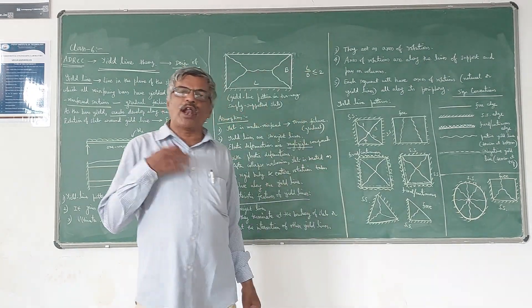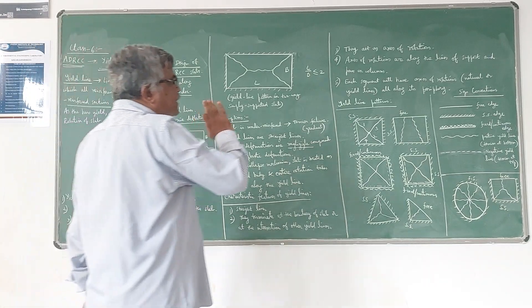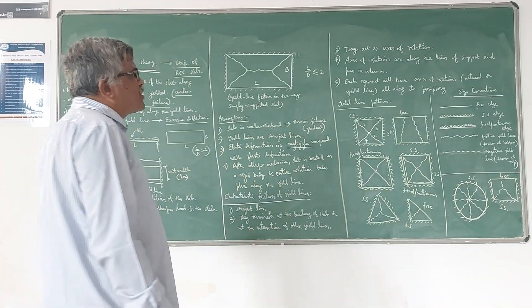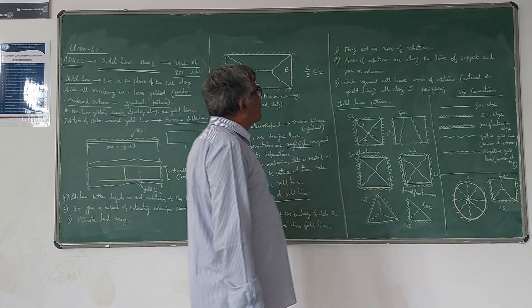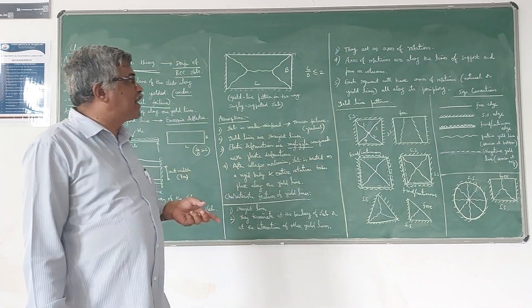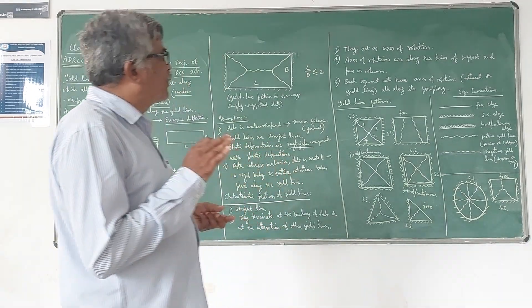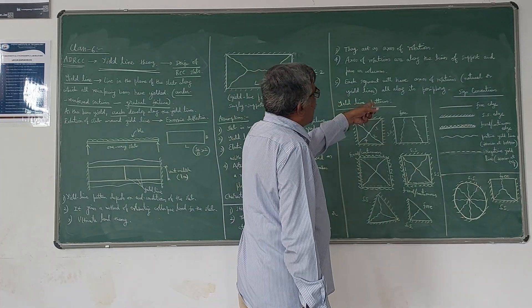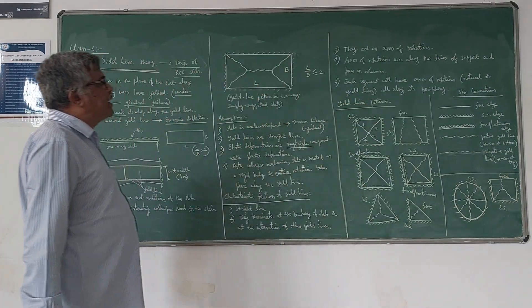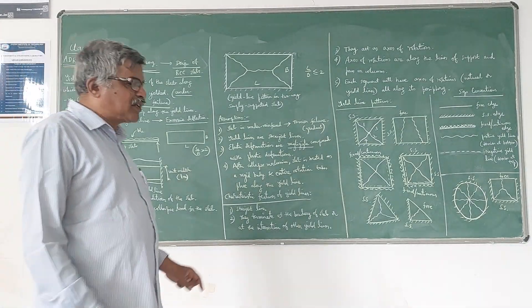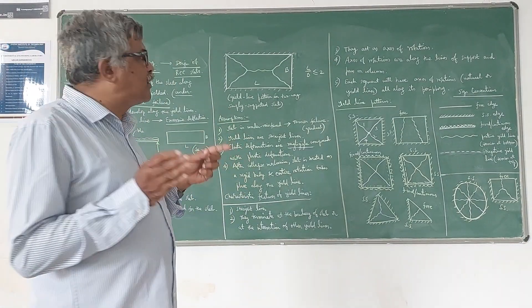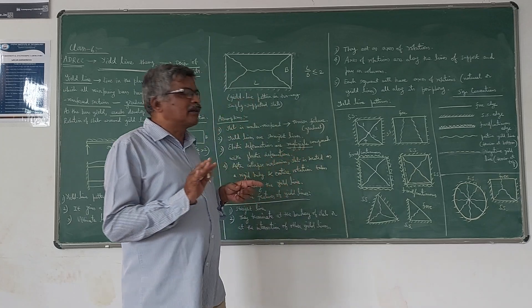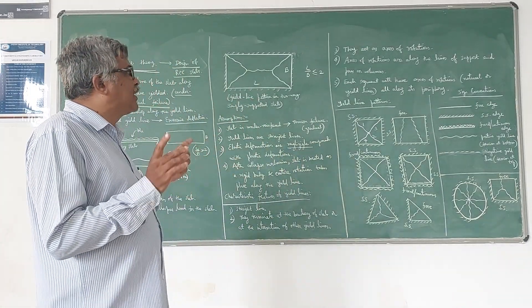Axes of rotation are along the lines of support and pass around columns. Along the lines of support, the axes of rotation lie and they always pass over the columns or supports. Each slab segment will have its own axis of rotation along its periphery — that is, along the boundaries.